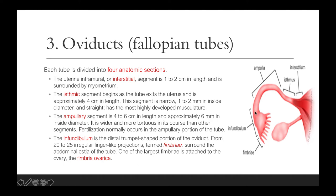Lastly, we have the infundibulum — the distal trumpet-shaped portion of the oviduct. From 20 to 25 irregular finger-like projections termed the fimbriae surround the abdominal ostium of the tube. One of the largest fimbriae is attached to the ovary, and that is what we call the fimbria ovarica.